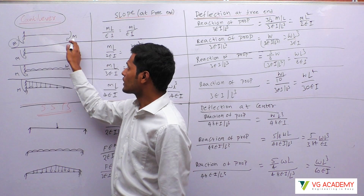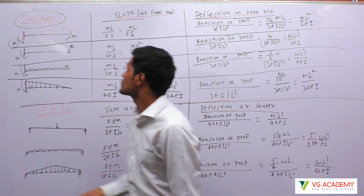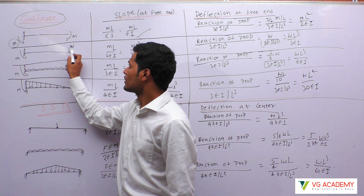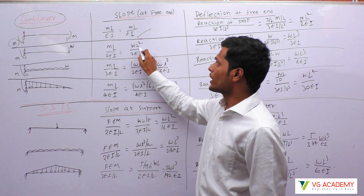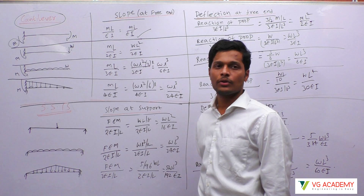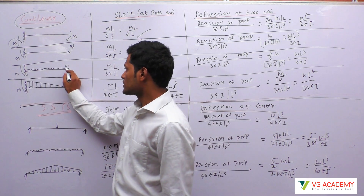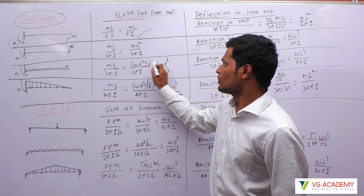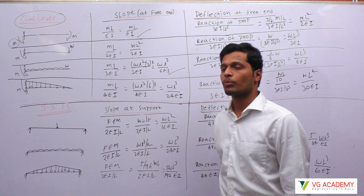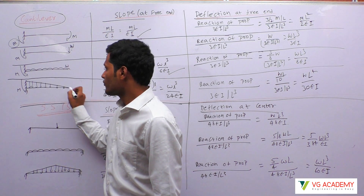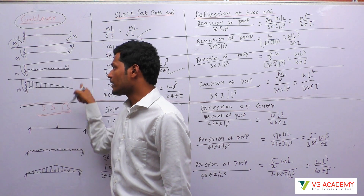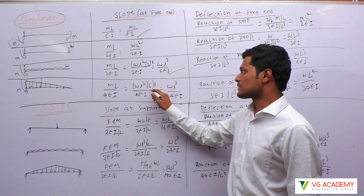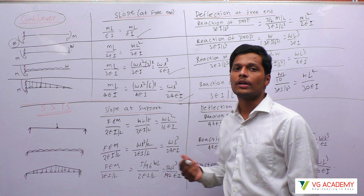If you substitute the moment M value, the answer is ML by EI. If you place a load W, the moment will be W into L, so the answer is WL squared by 2EI. For UDL, the reaction moment is WL squared by 2, and substituting into ML by 3EI gives WL cubed by 6EI. For a triangular load, the moment is the area of the triangle times L/3 distance, which is WL squared by 6, giving WL cubed by 24EI.